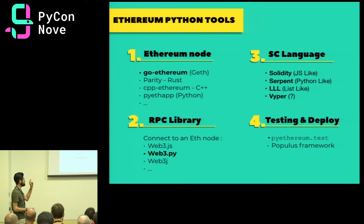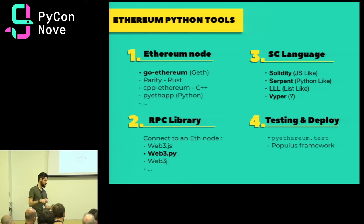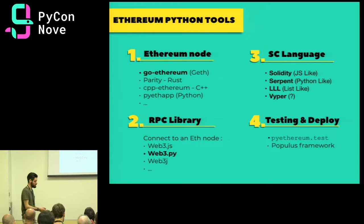The second important thing is the RPC library. Once you have a node running on your PC, you might want to connect to it. Every node exposes a JSON-RPC interface through which you can connect and make requests to the node's functions. You need a library to do that. We have Web3.py, which is a Python library to use these APIs — very handy.